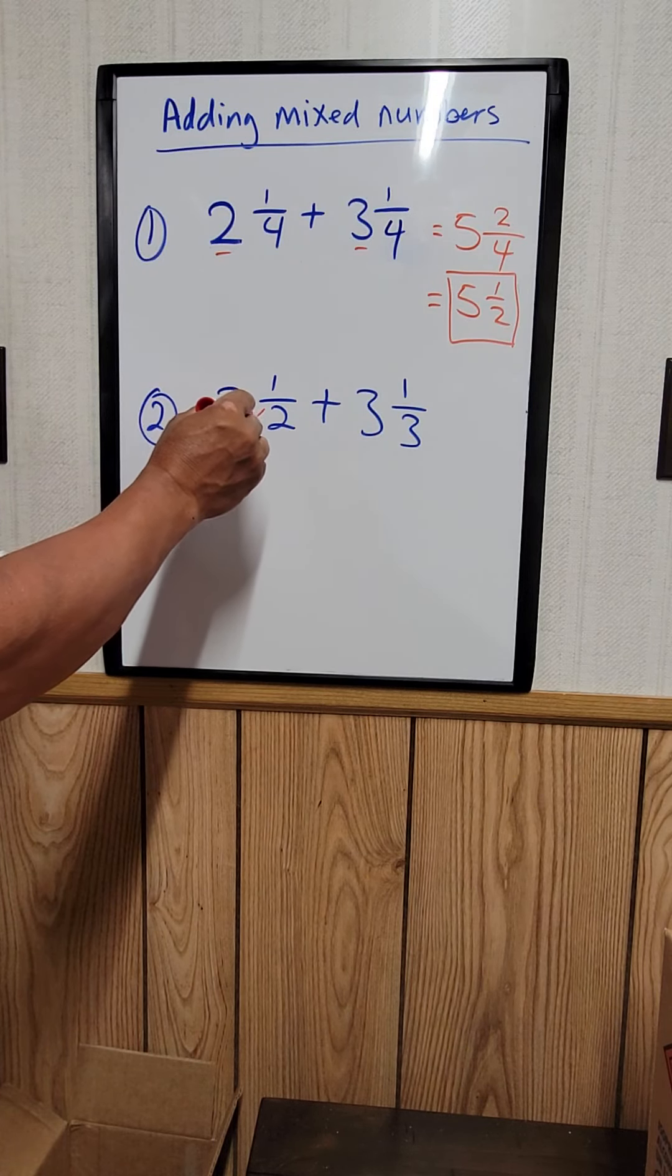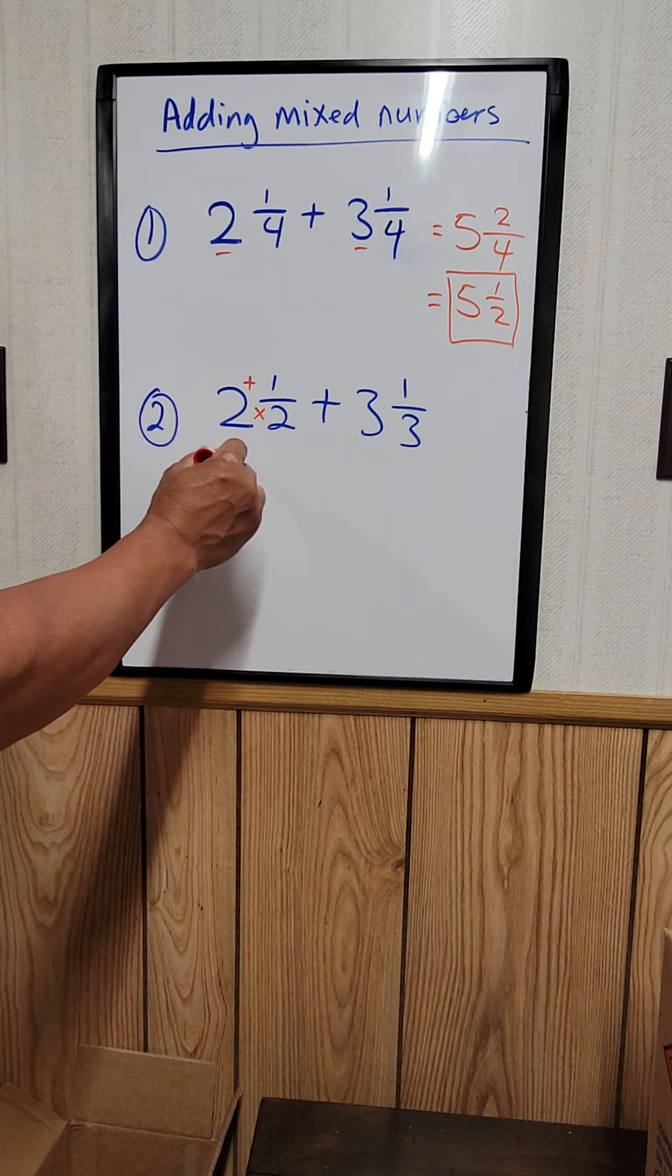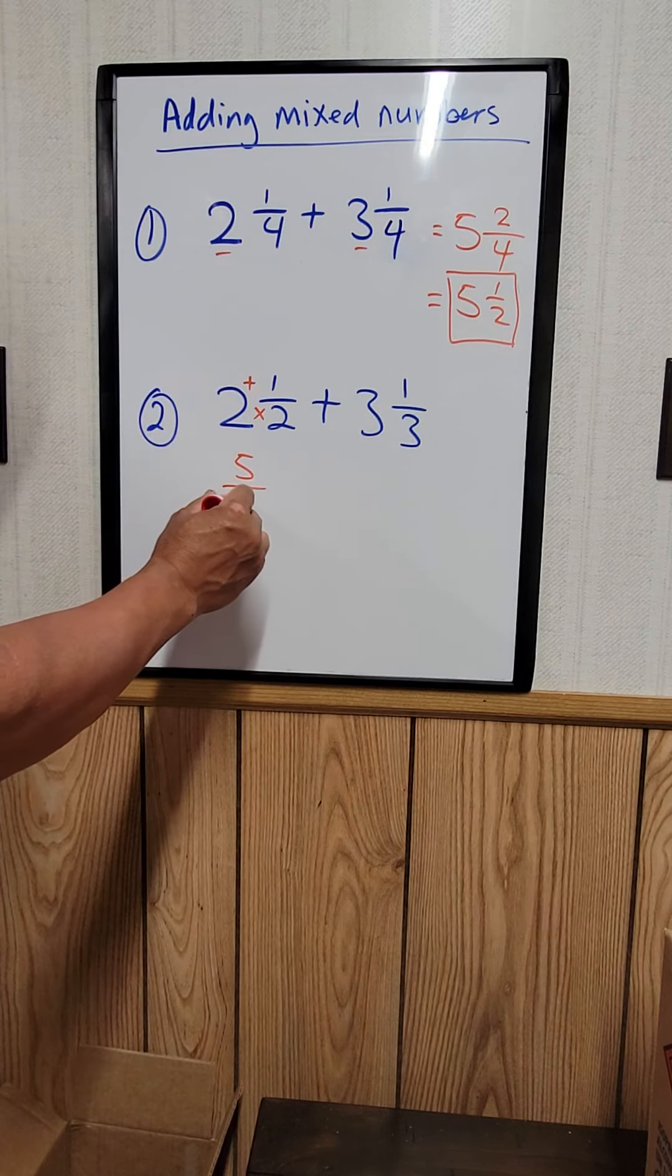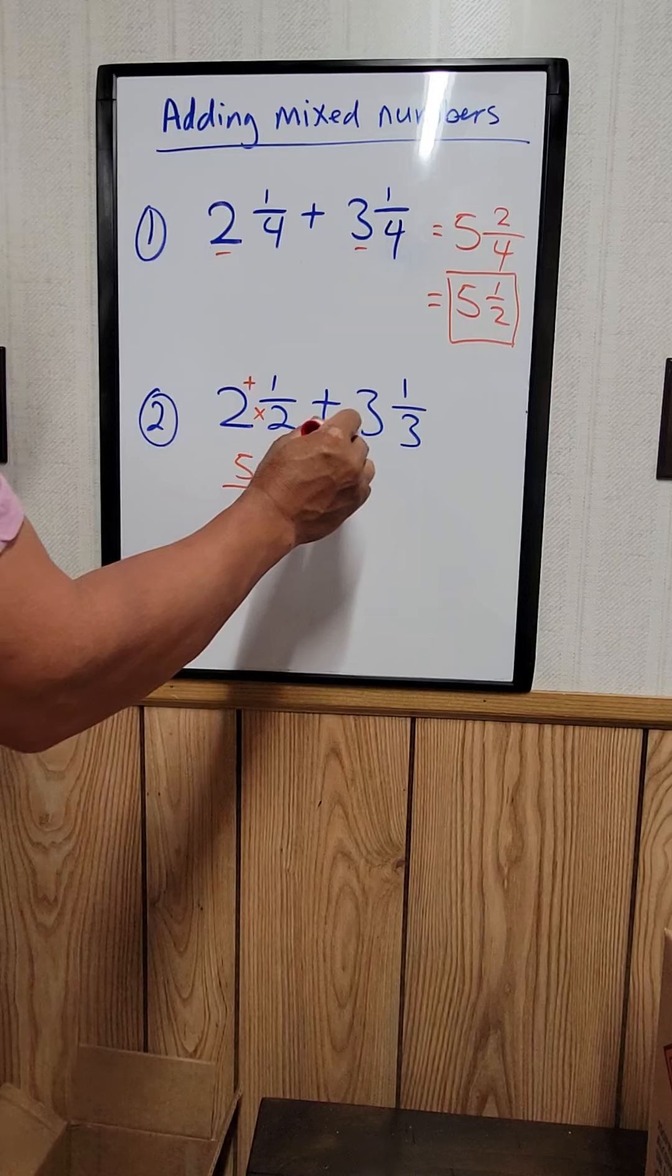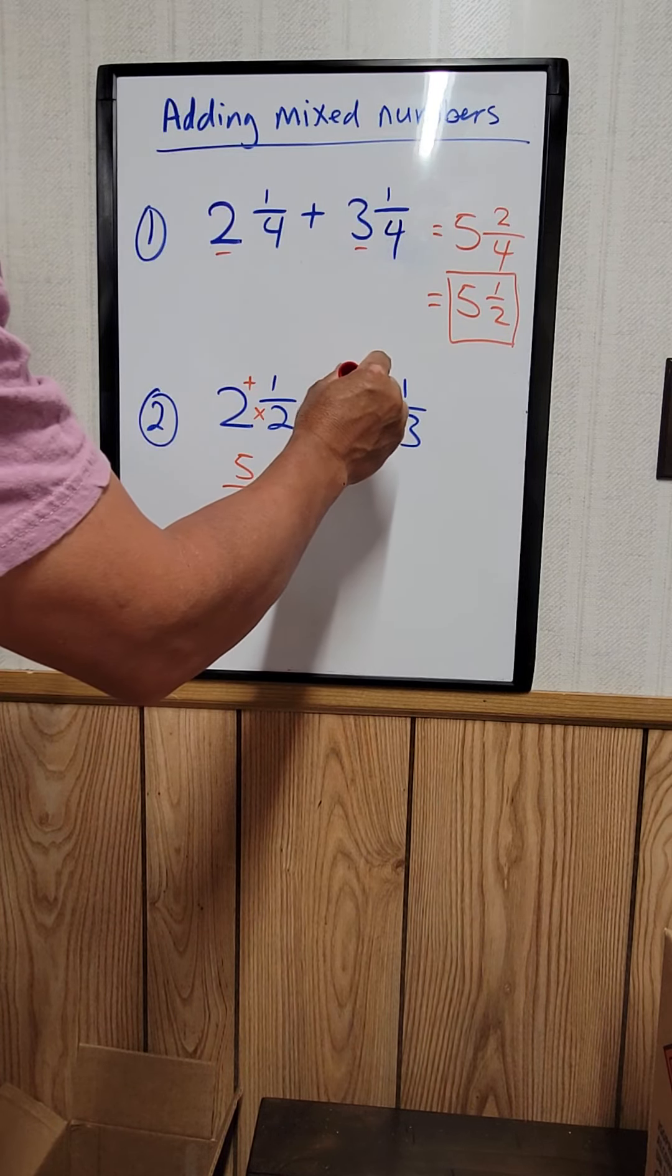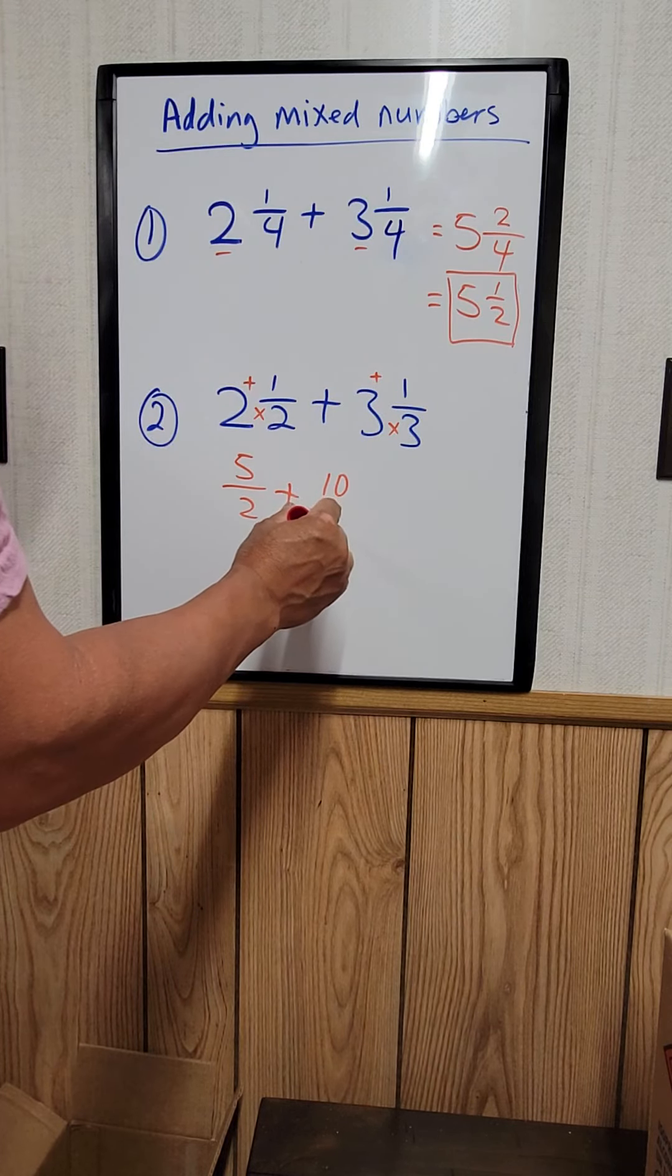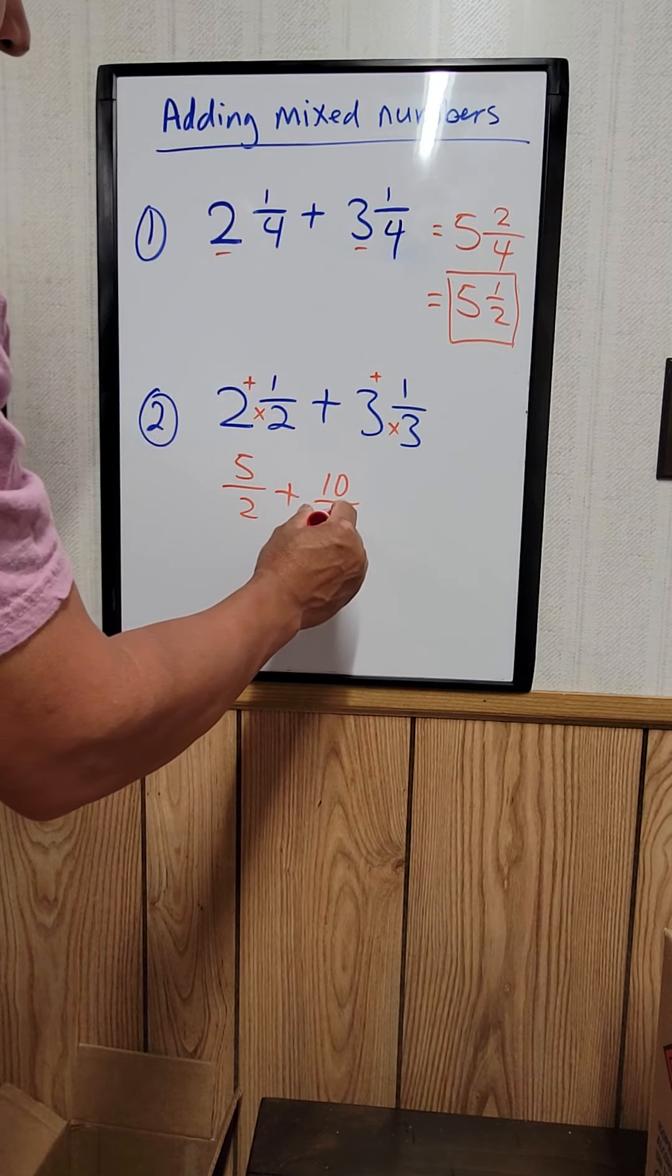To do that, you just take 2 times 2 plus 1. So 2 times 2 is 4, 4 plus 1 is 5 over 2. Plus, same thing here: 3 times 3 is 9, 9 plus 1 is 10 over 3.